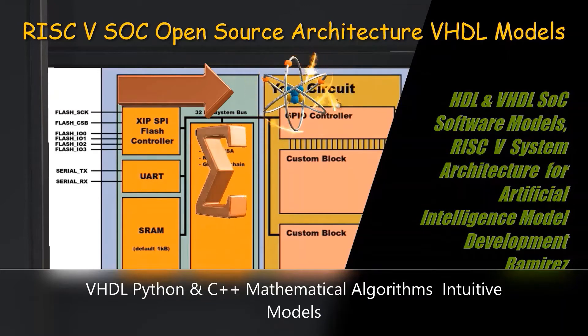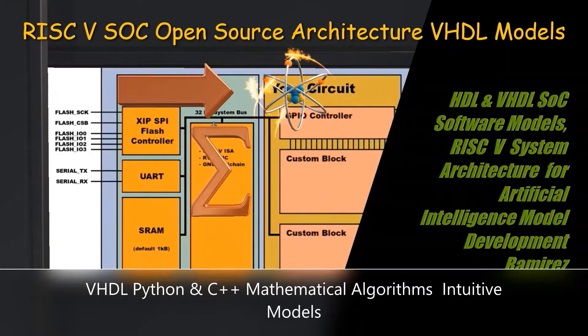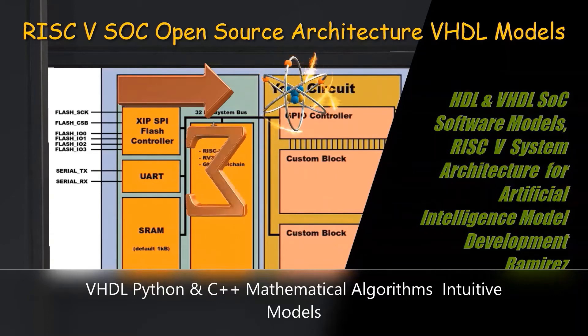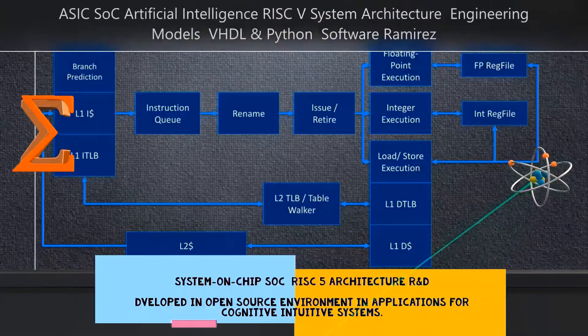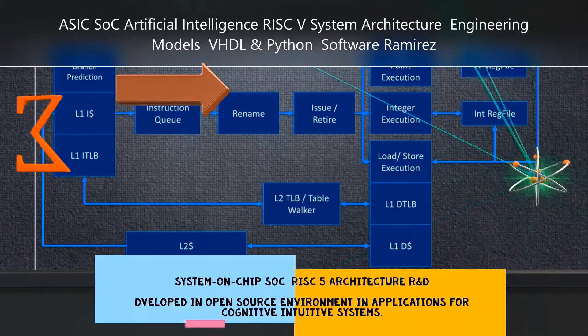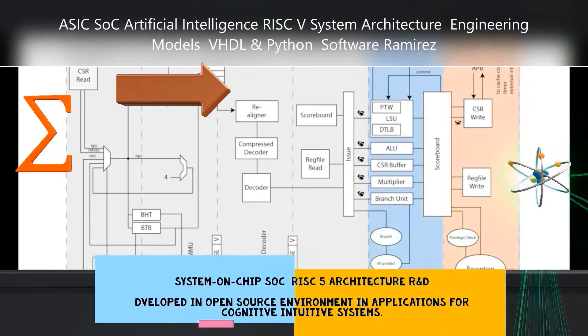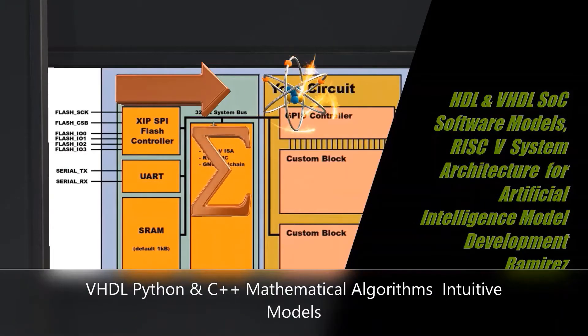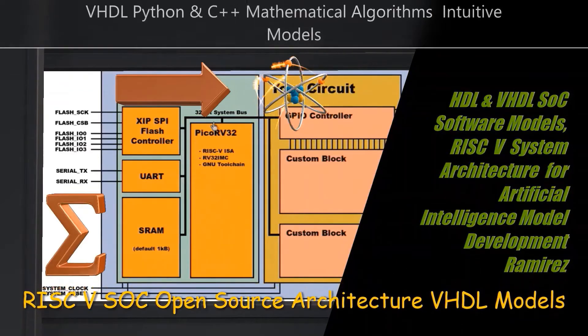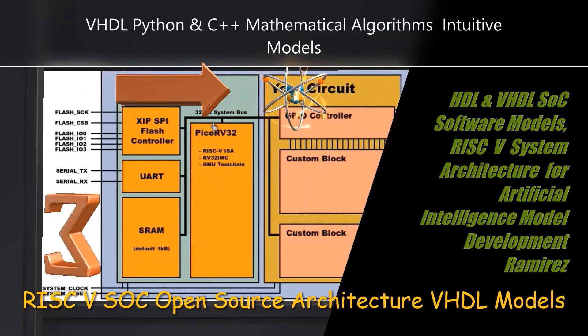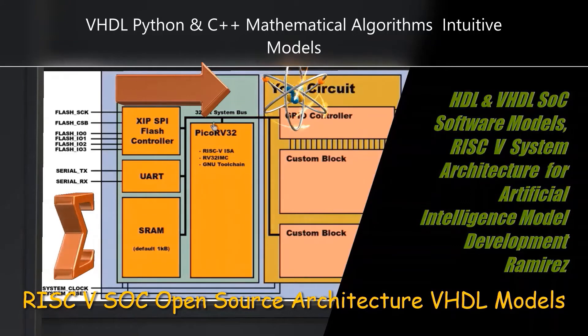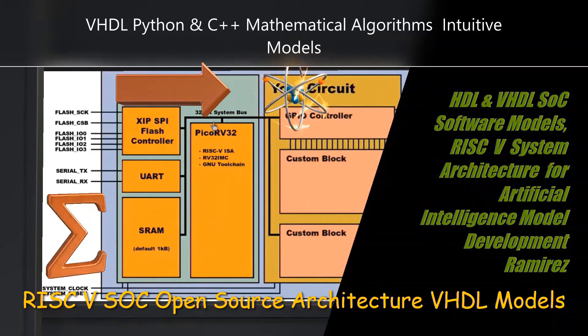Data hazards can perform bottlenecks in both integer and floating-point programs. Often, it is easier to deal with data hazards in floating-point programs because the lower conditional branch frequency and more regular memory access patterns allow the compiler to try to schedule instructions to avoid hazards. It is more difficult to perform such optimizations in integer programs that have less regular memory access involving more use of pointers.